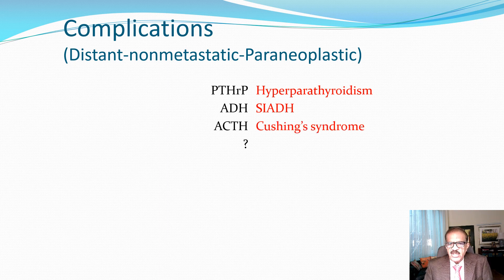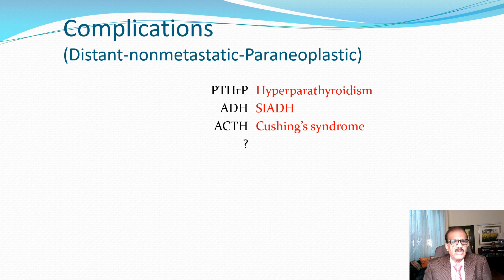Some malignancies, particularly small cell lung cancers, may produce ACTH — a corticotropin or ACTH-like substance. This stimulates both adrenal glands and the patient will develop Cushing syndrome, meaning they have all the features of excess cortisol. There is a separate lecture available for those interested in the details of Cushing syndrome.